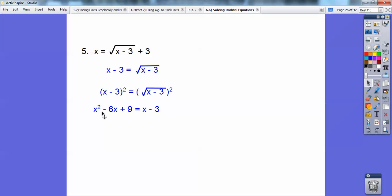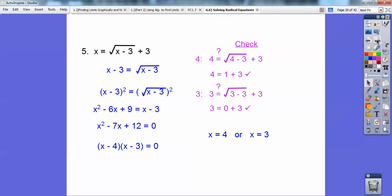And then now I have a quadratic equation, I'm going to set it equal to 0, so I'm going to subtract x from 6x, it's going to be a minus 7x, I'm going to add 3 to 9, that's going to get me a 12, so I get x squared minus 7x plus 12 equals 0, and then go ahead and factor that, and you get x equals 4 or 3, and then up above, I'm going to check both of those, you guys.